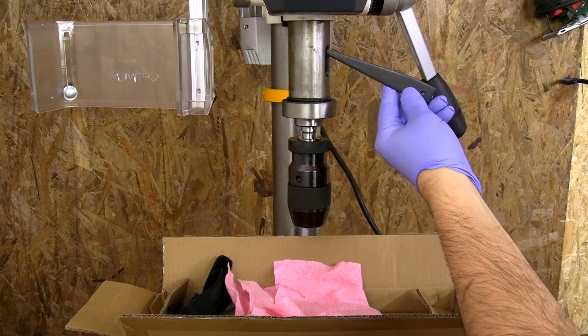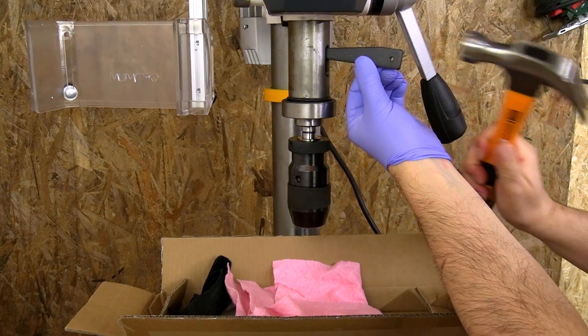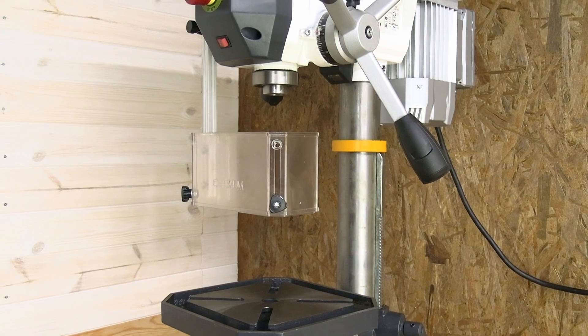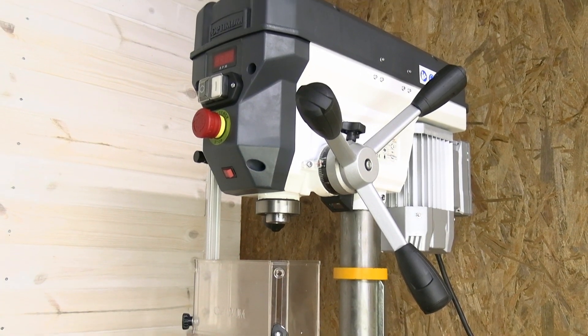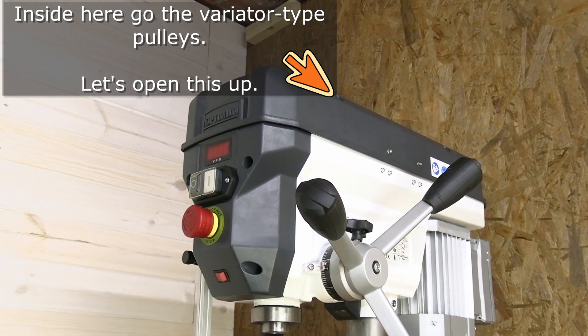I have already discovered what this metal wedge is for. We are finally going to see how to install the chuck of this super drill press. We will also see how the curious variator type pulleys work to adjust the rotation speed.